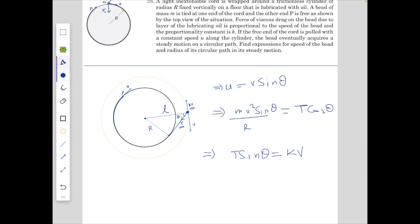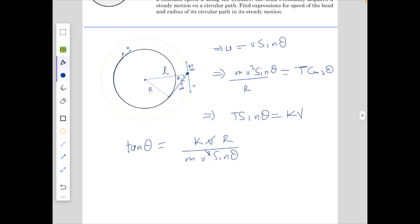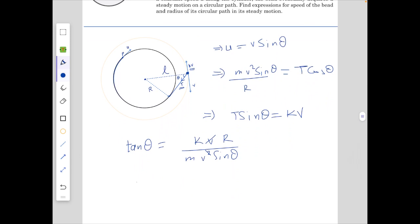So these are the three equations and we need to solve for V and theta. What we get from the second and third equation by dividing them, we get tan of theta equals KV over MV square sine theta over R. And here V cancels. So from here we got a relation between V and theta and another relation is U equals V sine theta.